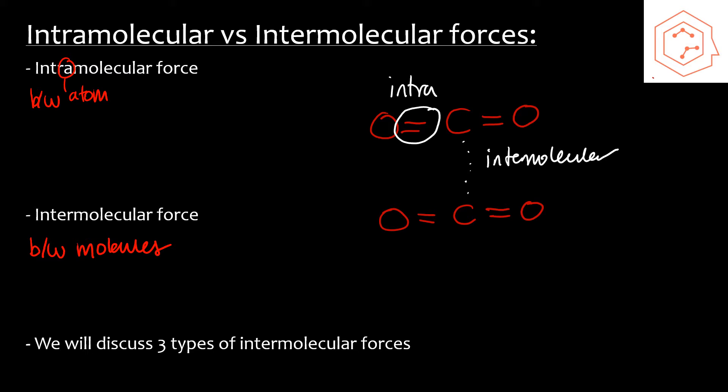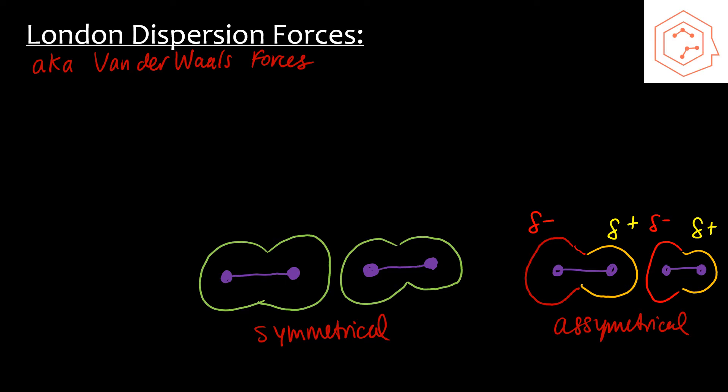Intramolecular forces are very strong forces and include ionic and covalent bonds. Intermolecular forces are weaker than intramolecular forces. We'll talk about the three types of intermolecular forces as they have a lot of biological applications. The first type are London dispersion forces, also known as van der Waals forces. These are the weakest type and they help hold nonpolar molecules.